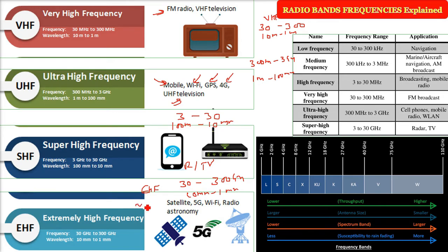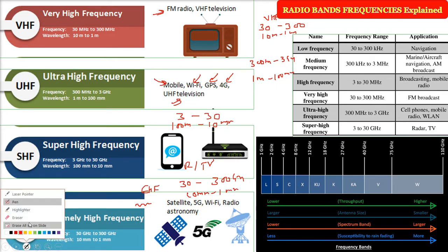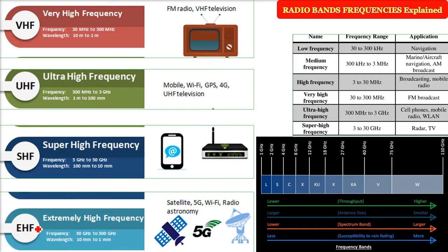Now these are the radio band frequencies — the different bands we have. There are also named frequency bands. When people work in this domain, they usually refer to L band, X band, C band, and so on. Let me tell you the frequencies of these bands.